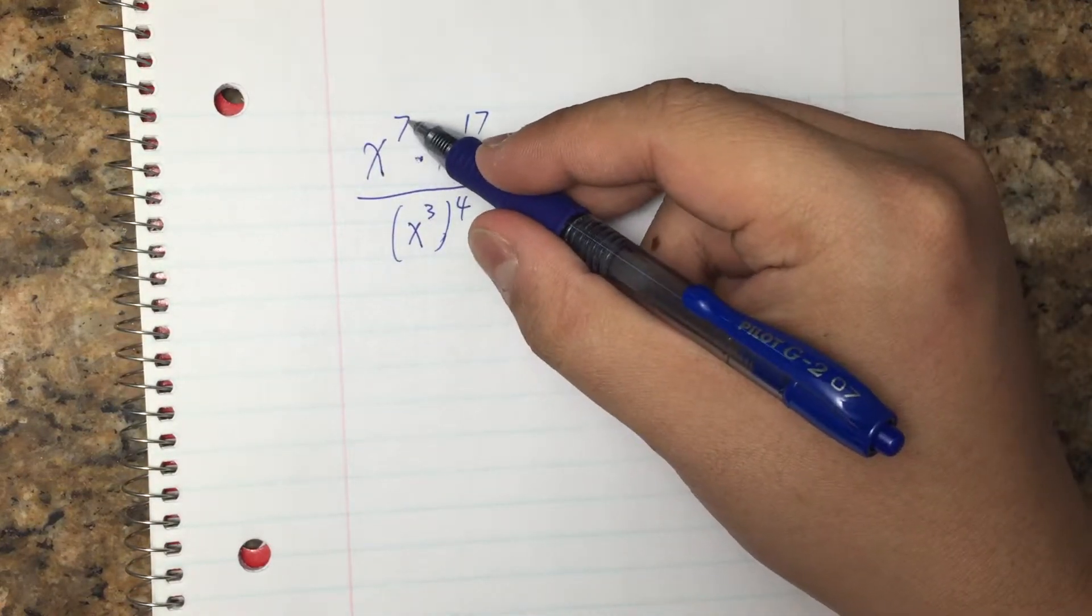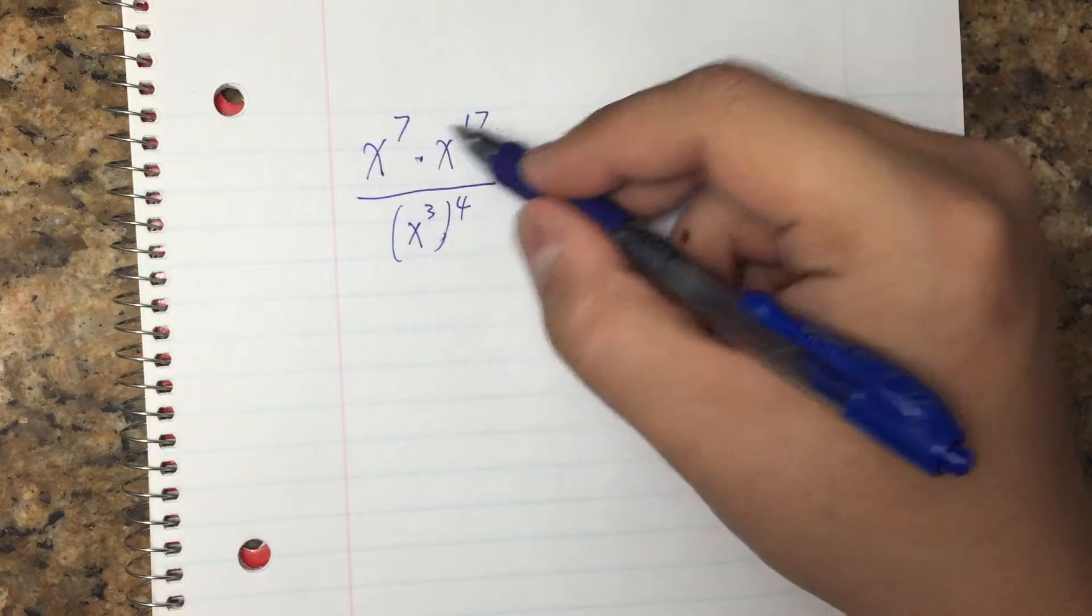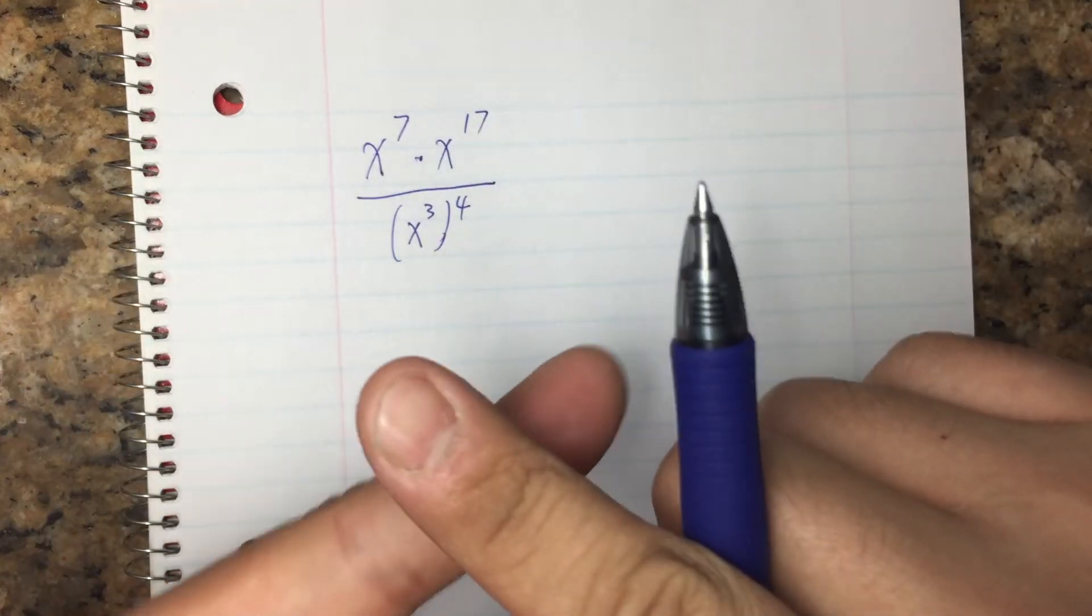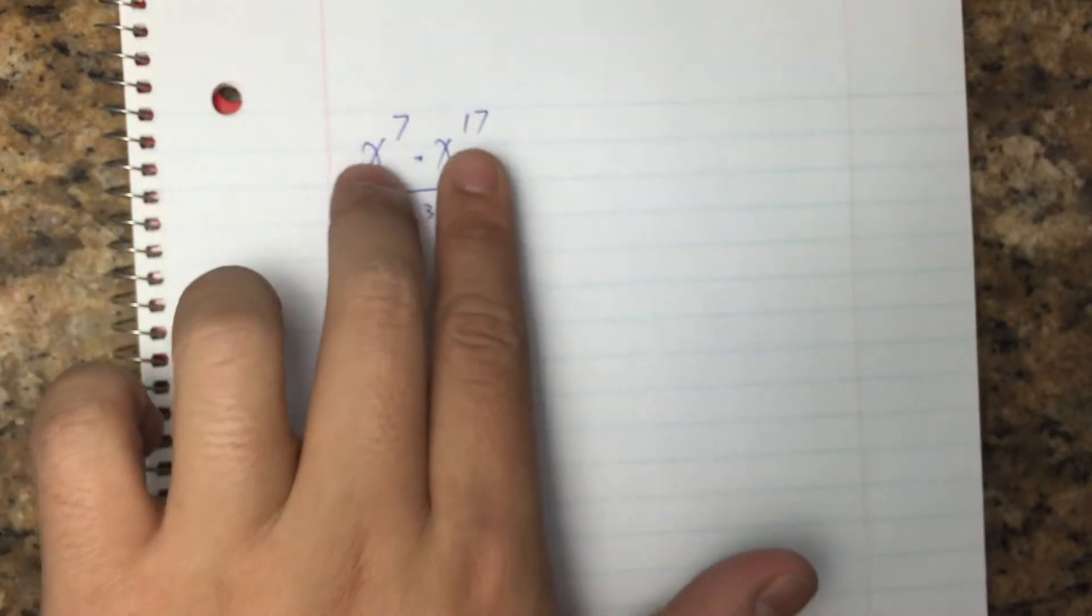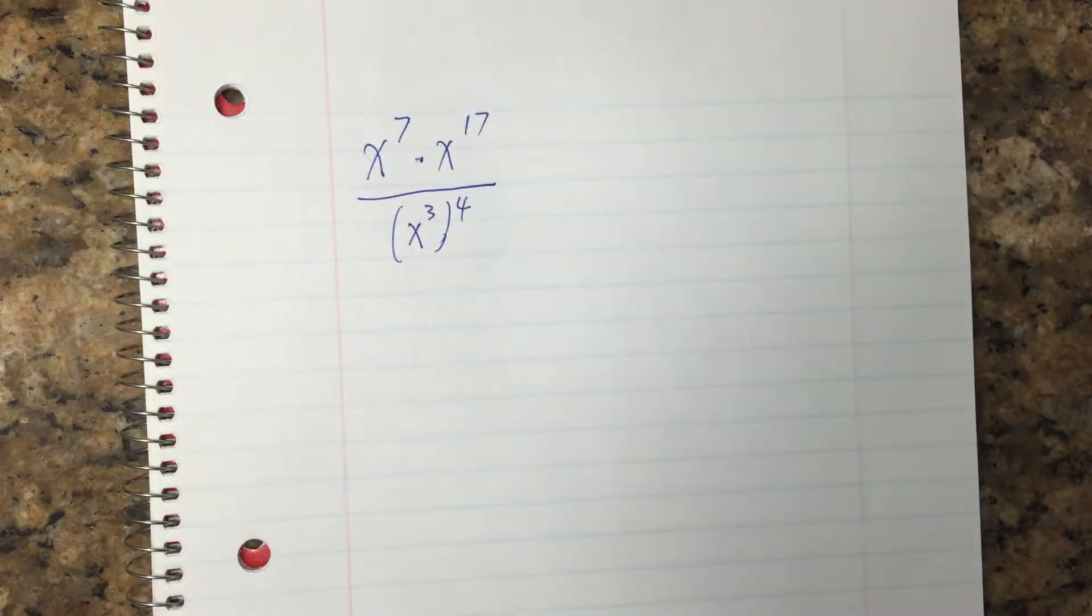Well, intuitively we have 7 of the x and 17 of the x. Together when we multiply, we will get 24 of the x.